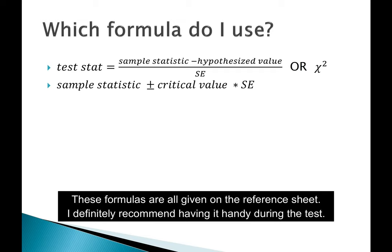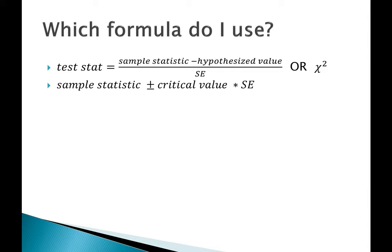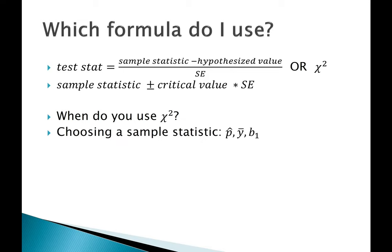How do you decide which formula to use? There are two basic things we calculate with formulas: the test statistic or the confidence interval. The test statistic has the general formula of a sample statistic minus the null hypothesis value, divided by the standard error — or it could be a chi-squared statistic, which is used for categorical data with more than two categories or two categorical variables. You'll need to pick a sample statistic — a proportion, mean, or slope — and the appropriate standard error formula.